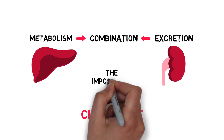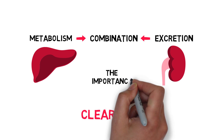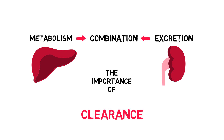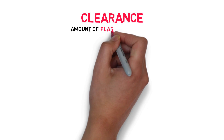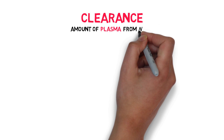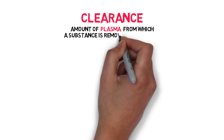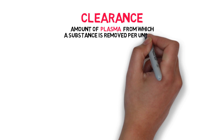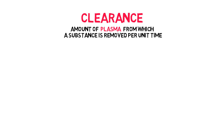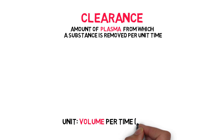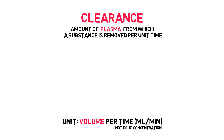In this video, we'll talk about the importance of clearance. Clearance is defined as the amount of plasma from which a substance is completely removed per unit time. Notice I didn't say amount of drug, but amount of plasma. Its unit is volume per time, not concentration per time, which can be confusing.